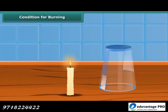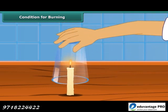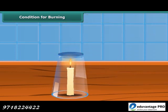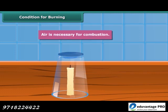Let us discuss the conditions necessary for burning. Light a candle and cover it with a glass tumbler. You will see that the candle stops burning after a while. This implies that the candle burns freely in the presence of air, therefore air is necessary for combustion.